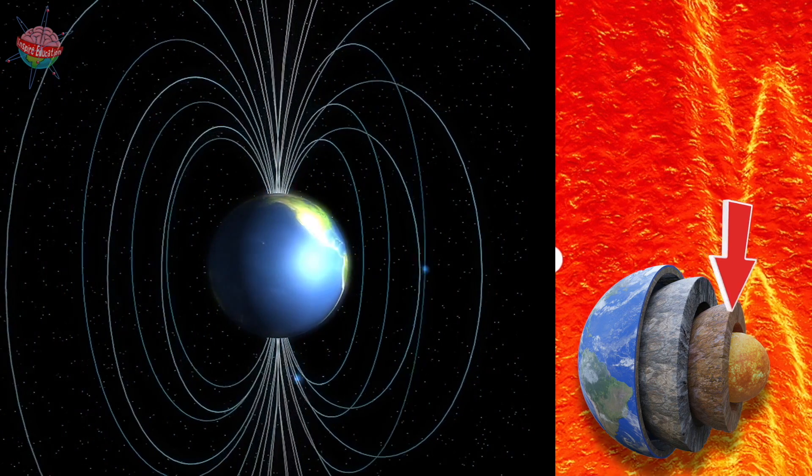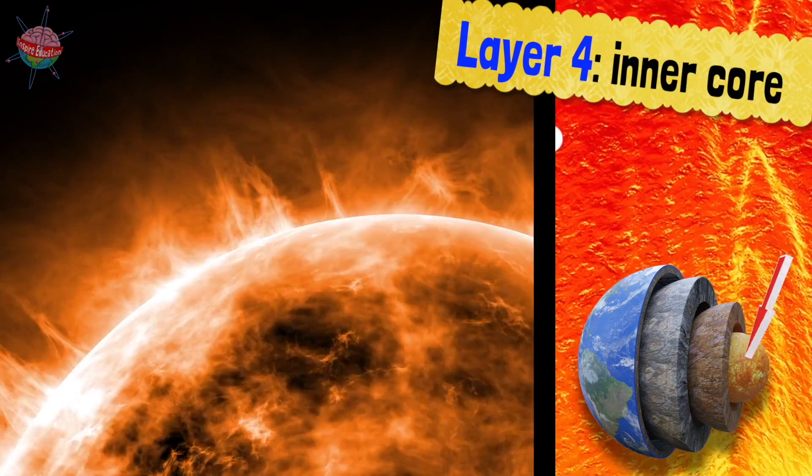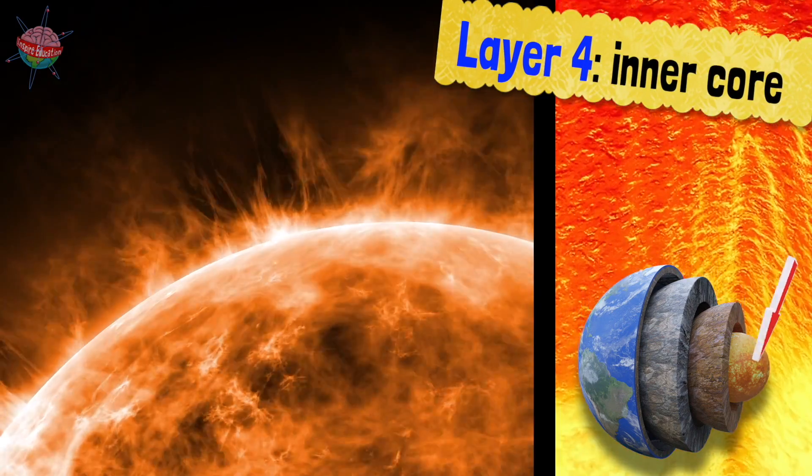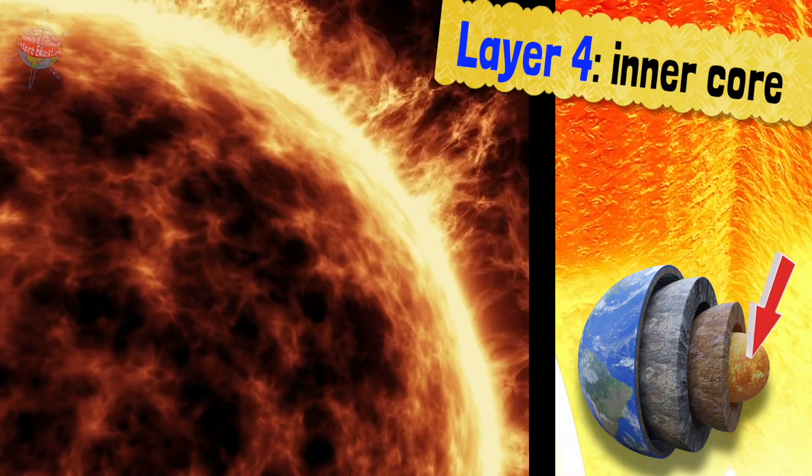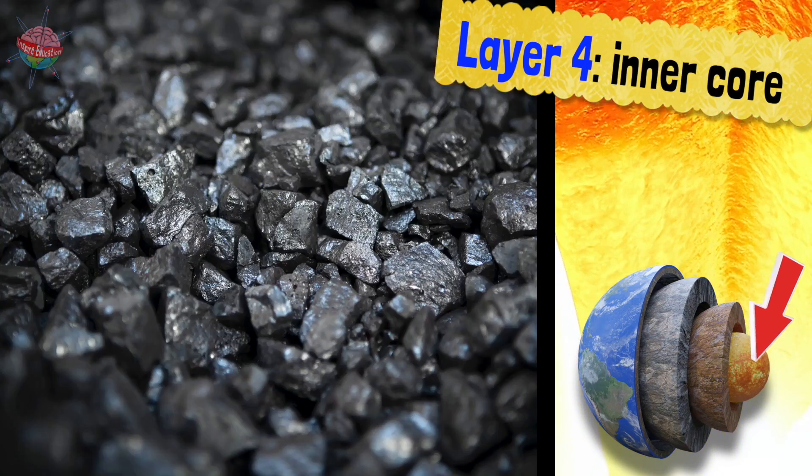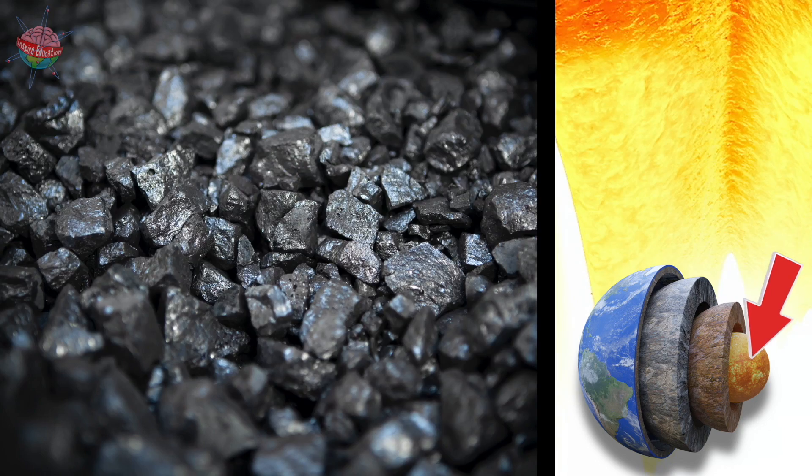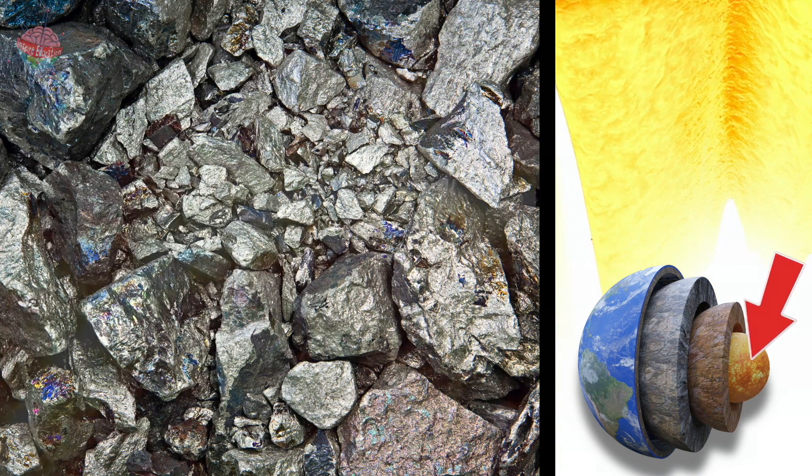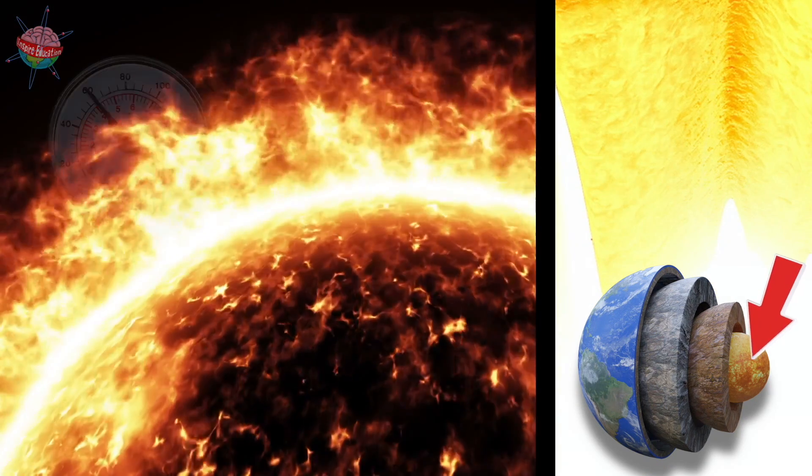The inner core is a massive metal ball, 2,500 kilometres wide. It is mostly made of iron, but also contains nickel. It remains solid because it is under so much pressure.